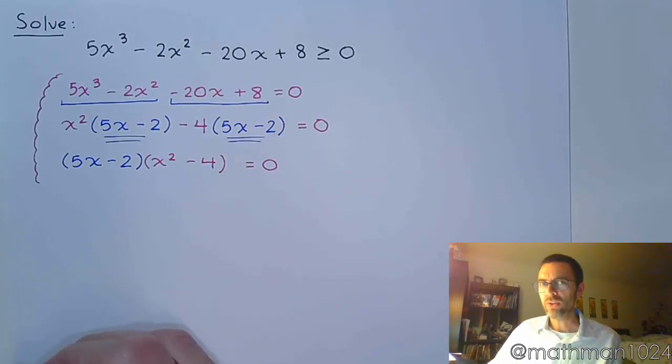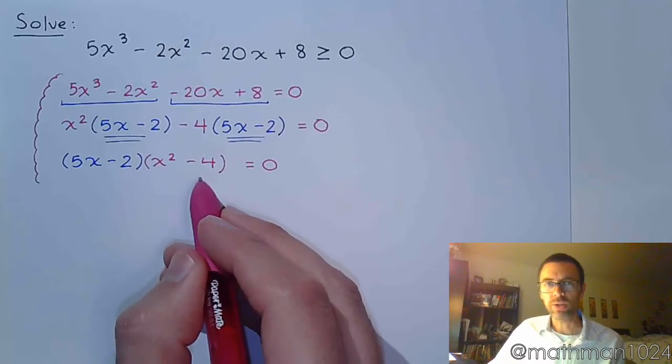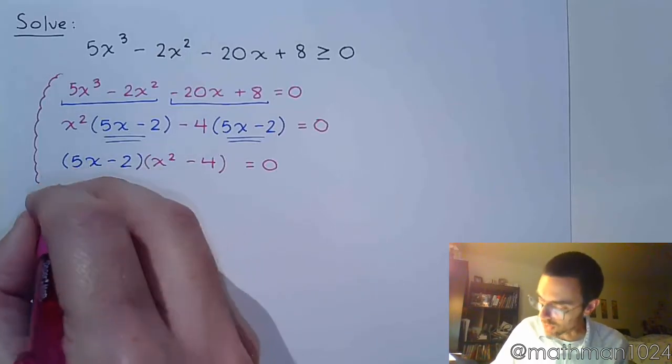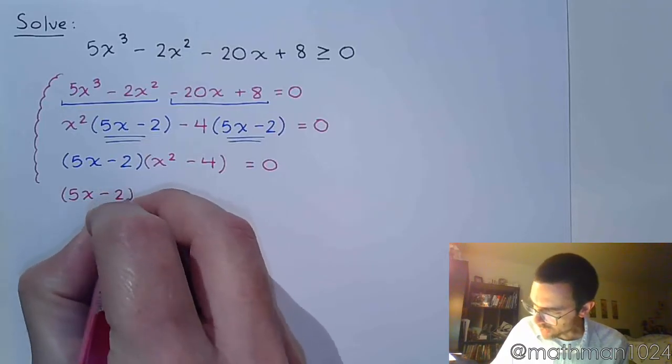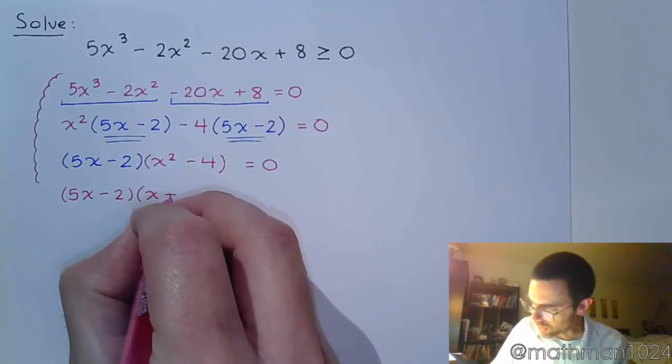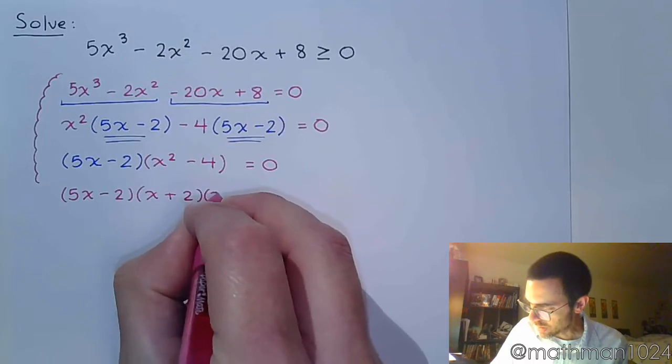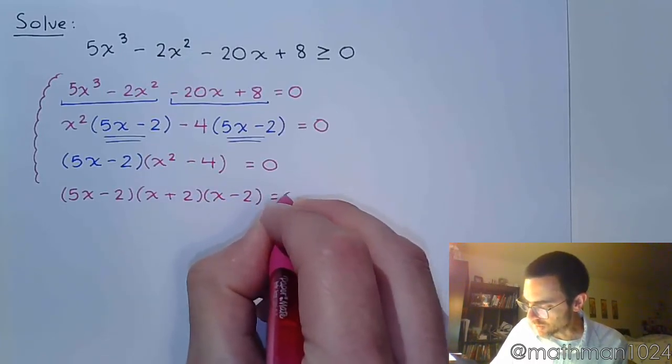And now I think we should go ahead and finish factoring this, because we see we have x² - 4, and that guy is the difference of squares. So it factors as (x + 2)(x - 2).